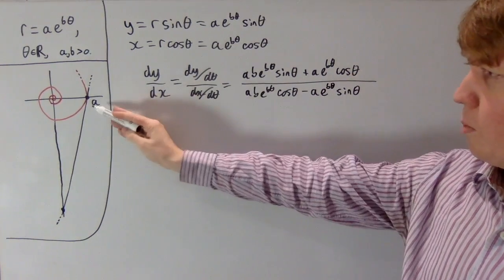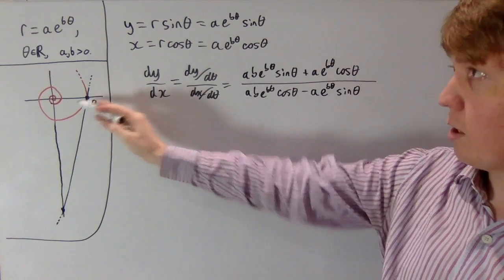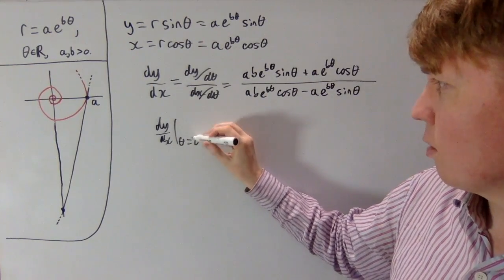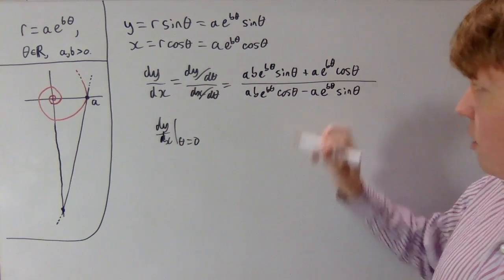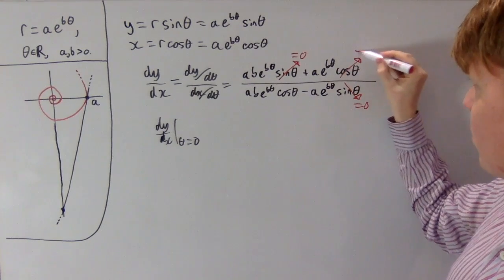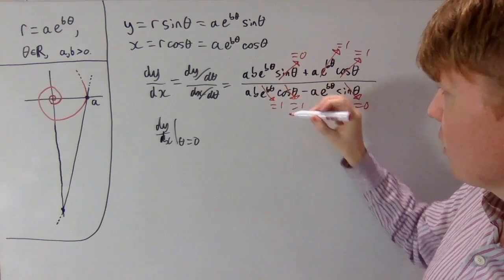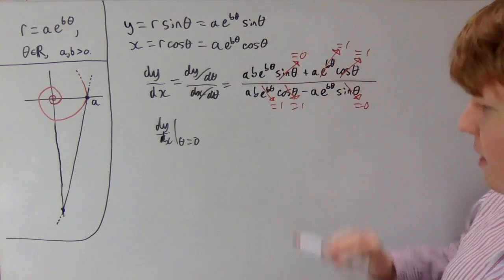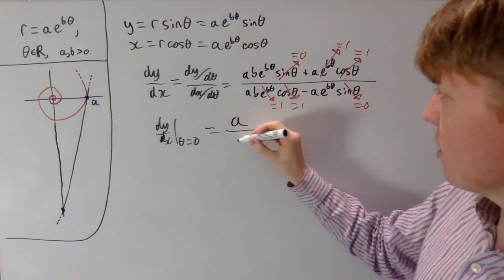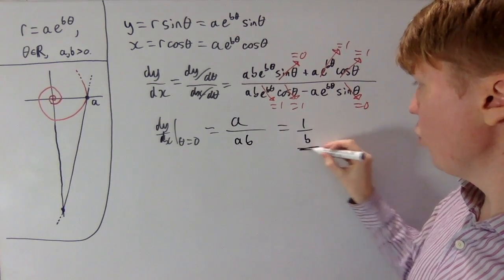We evaluate this at the point x = a, y = 0, which is where θ = 0. Substituting θ = 0: sinθ = 0 so many terms vanish, cosθ = 1, and e^(bθ) = 1. We're left with a simple expression: a in the numerator and ab in the denominator, giving dy/dx = 1/b. So the gradient of our tangent line is 1/b.